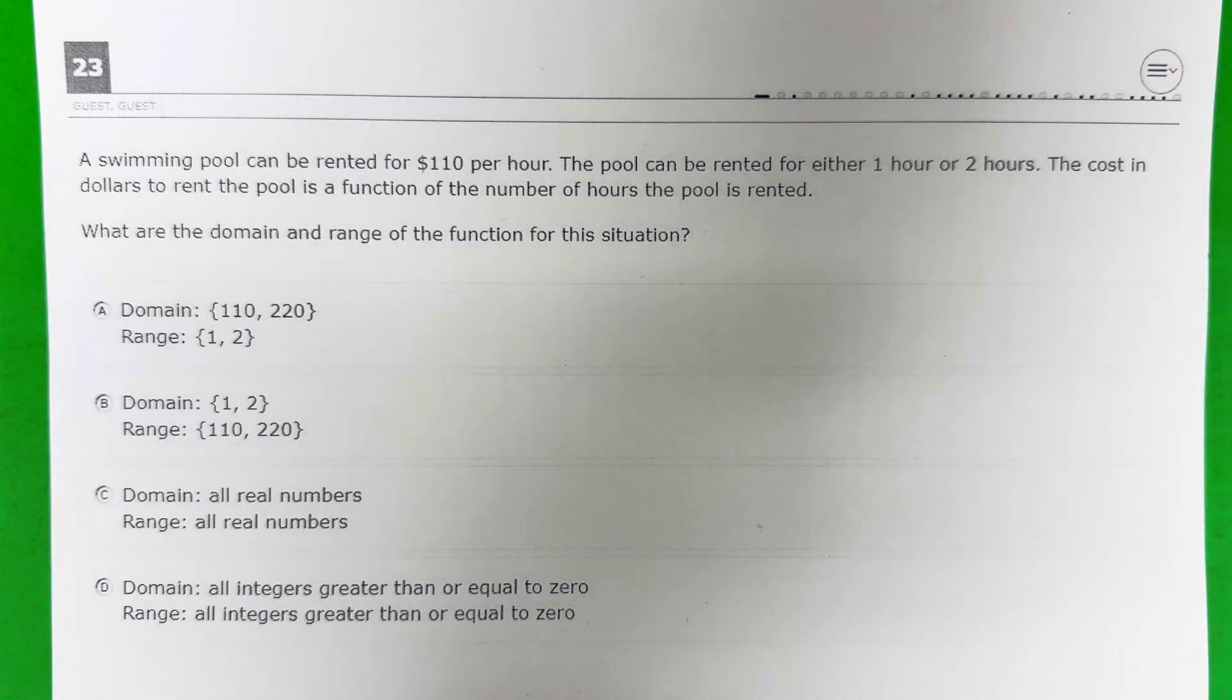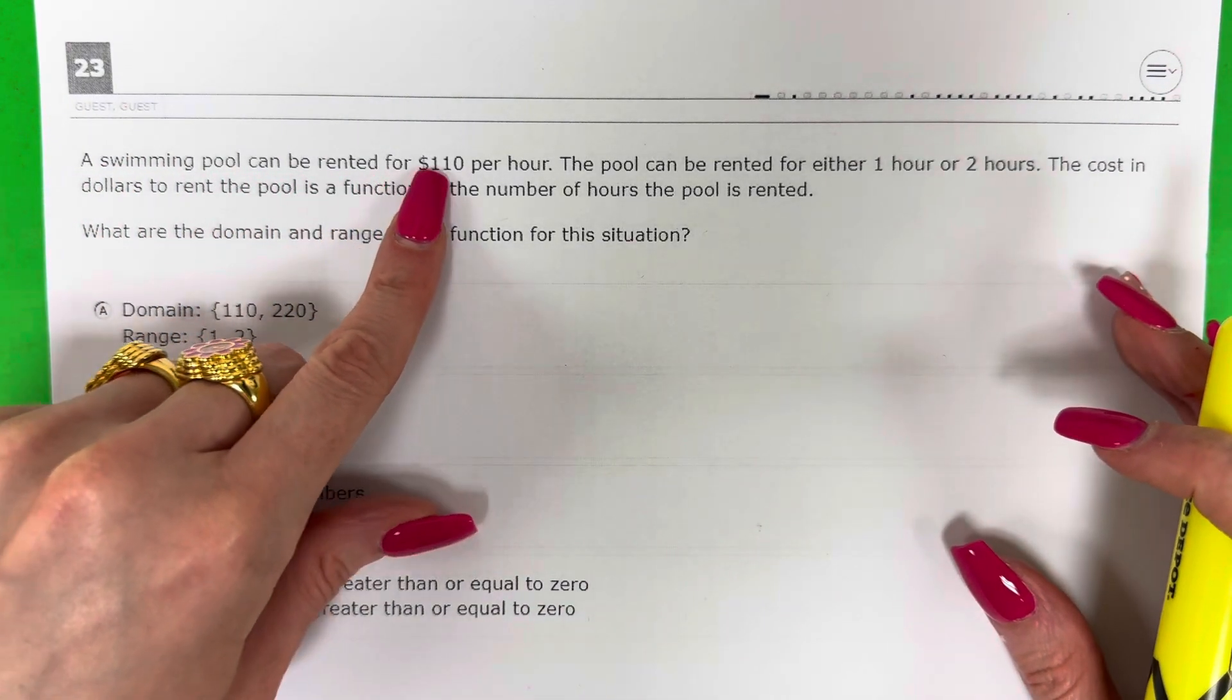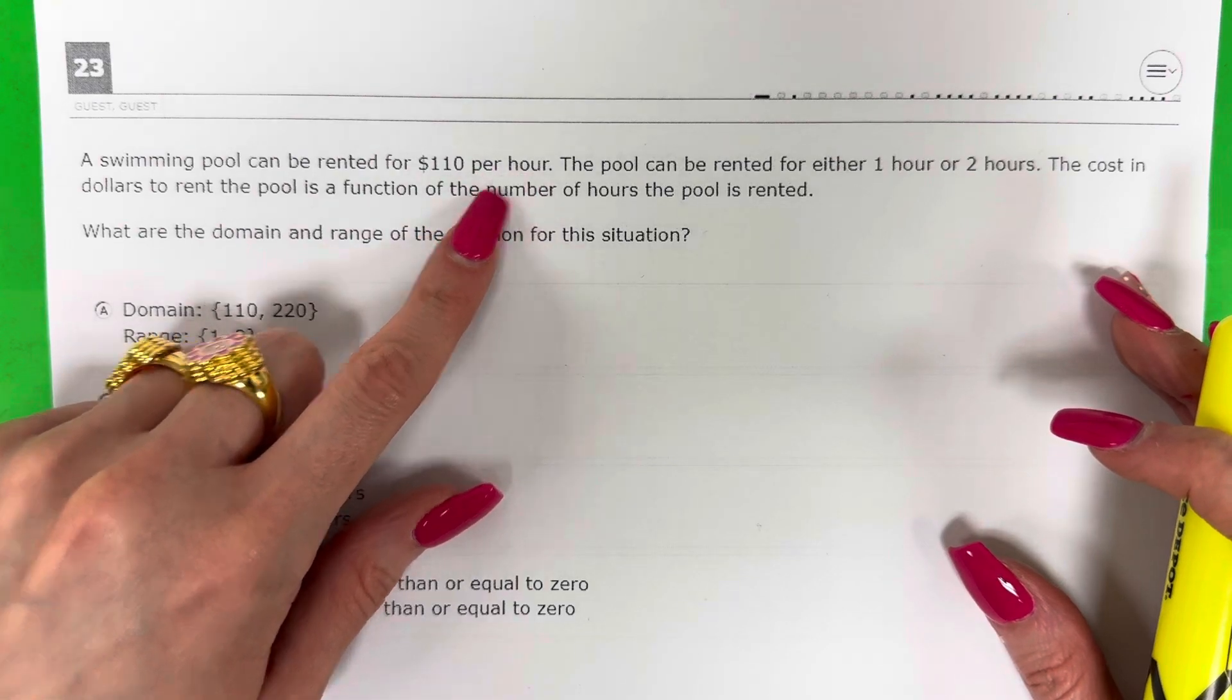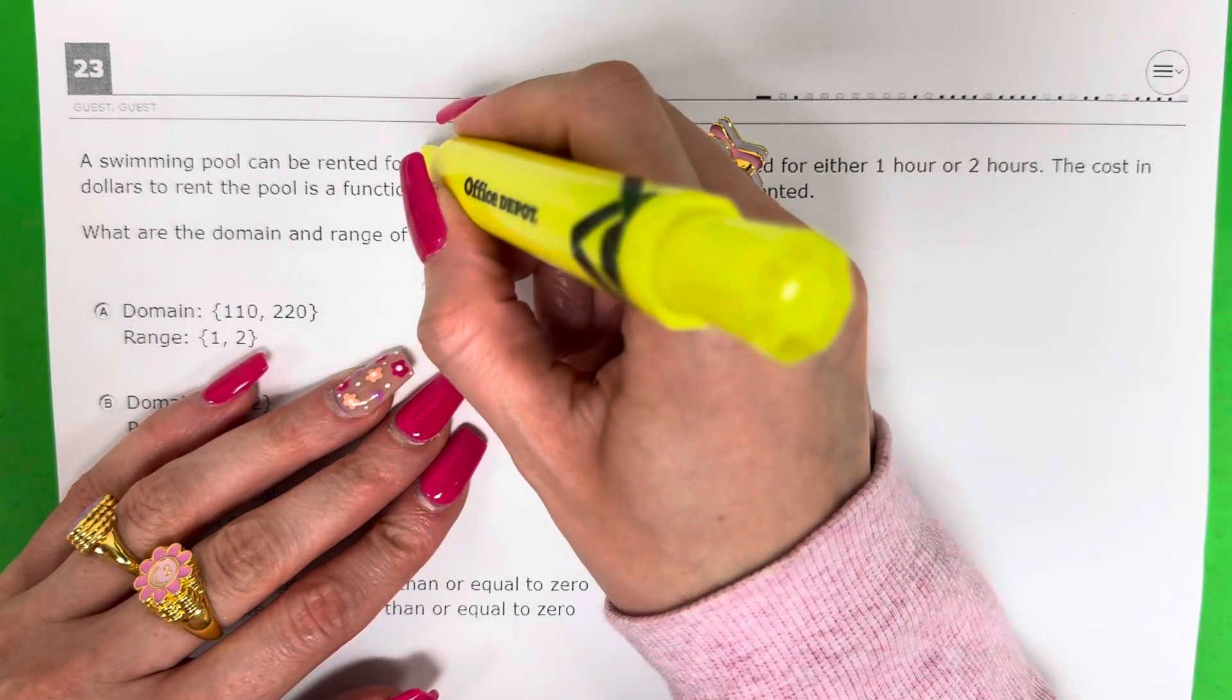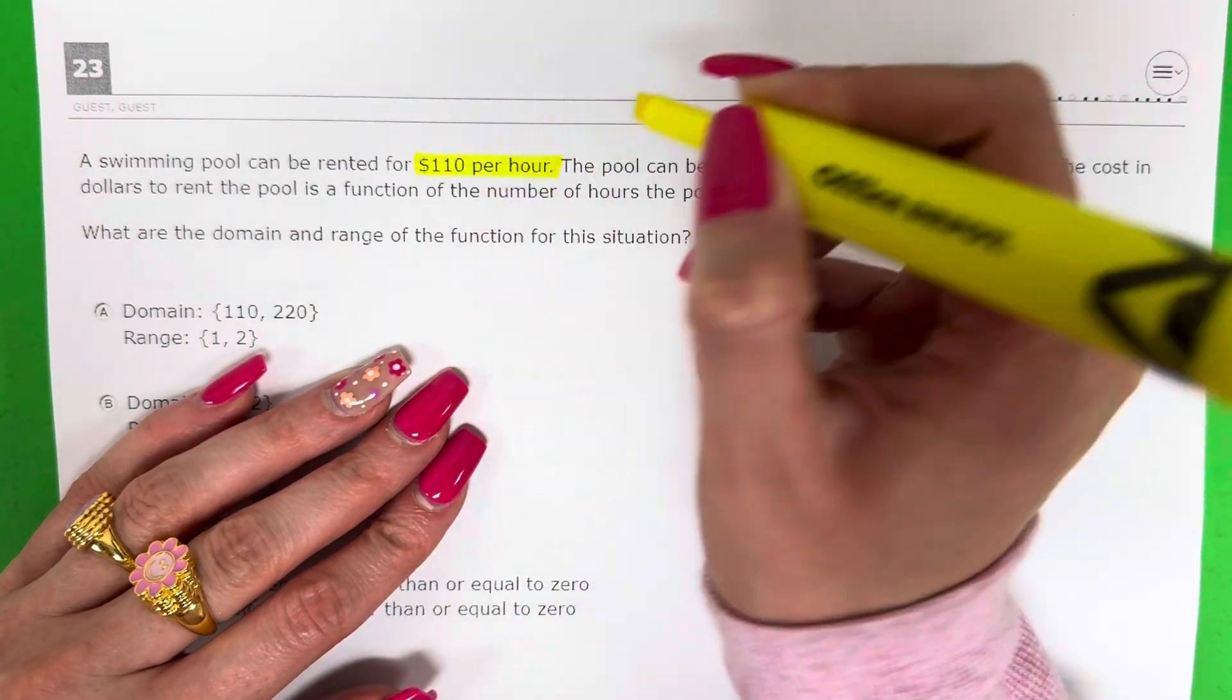Question 23. A swimming pool can be rented for $110 per hour. So I can rent it for $110 every hour.